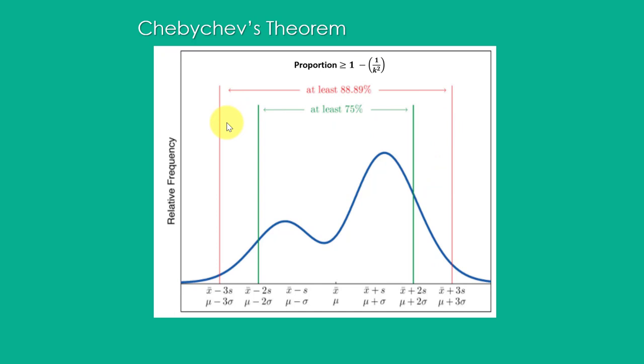Chebyshev's formula says that the portion of any data lying between k standard deviations is at least one minus one divided by k squared, but it is important to remember this formula only works for integer values of k and for k greater than one. Because the percentages beyond four standard deviations are so small, we usually stop at a k of four.